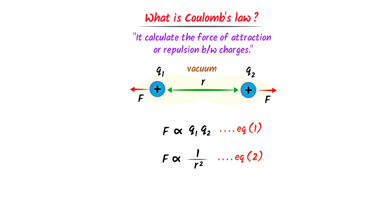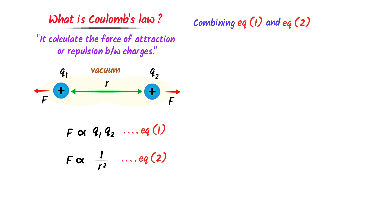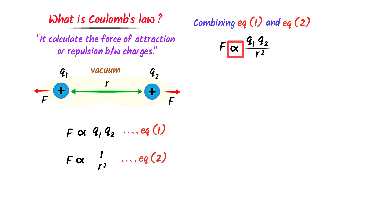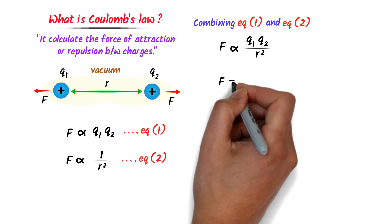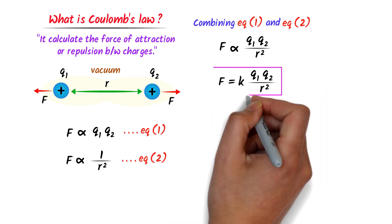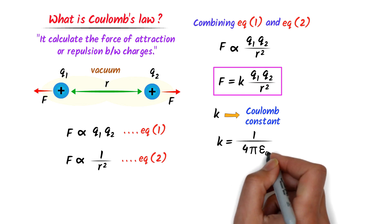Combining these two proportionalities by removing the sign of proportionality and placing a constant, I write: F = k × Q1 × Q2 / R². This is known as Coulomb's law. Here k is known as Coulomb's constant, where k = 1 / (4πε₀). Remember that k is actually the property of a medium. In case of vacuum or air, the value of k is approximately 9 × 10⁹ N·m²/C².